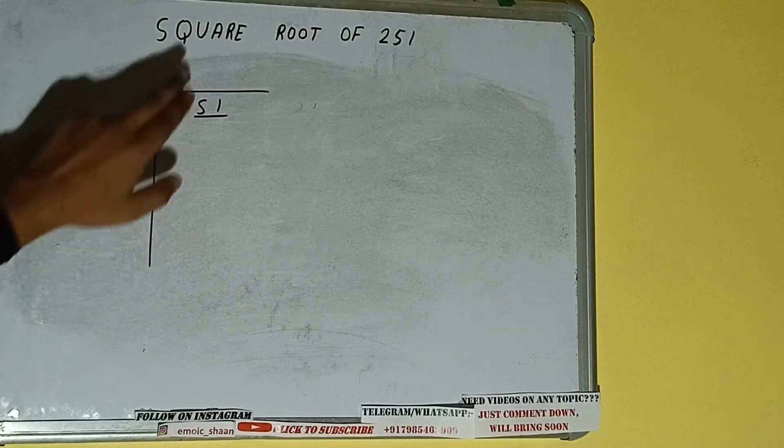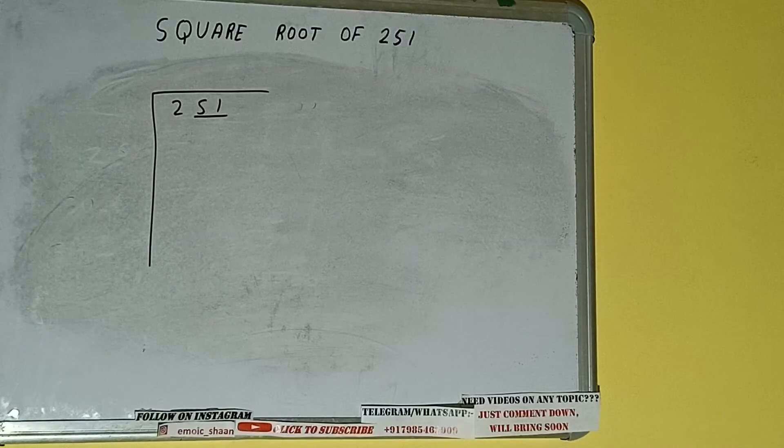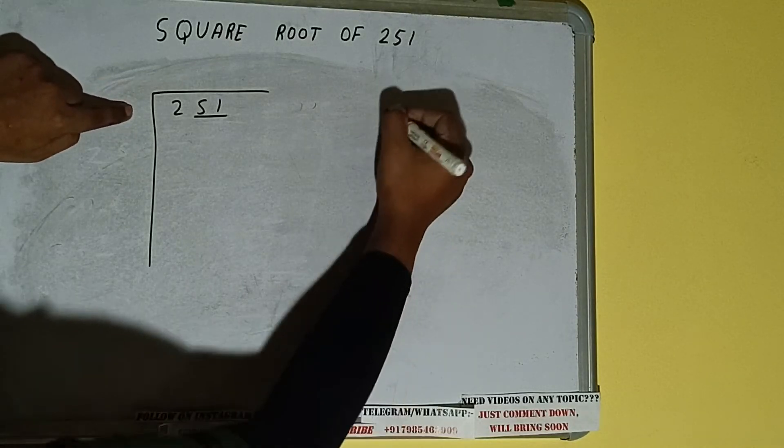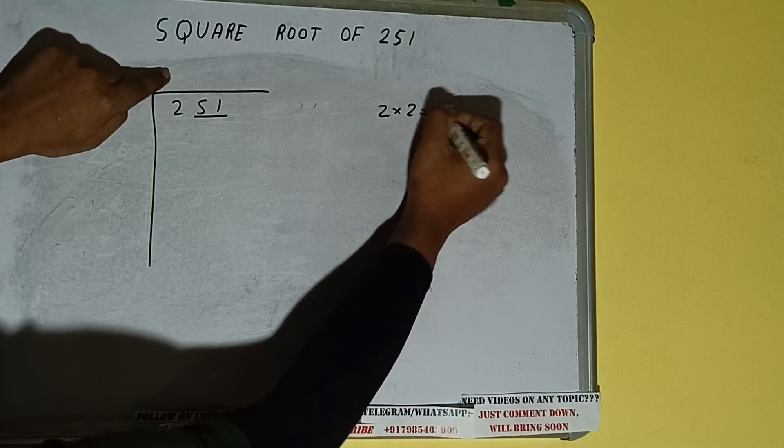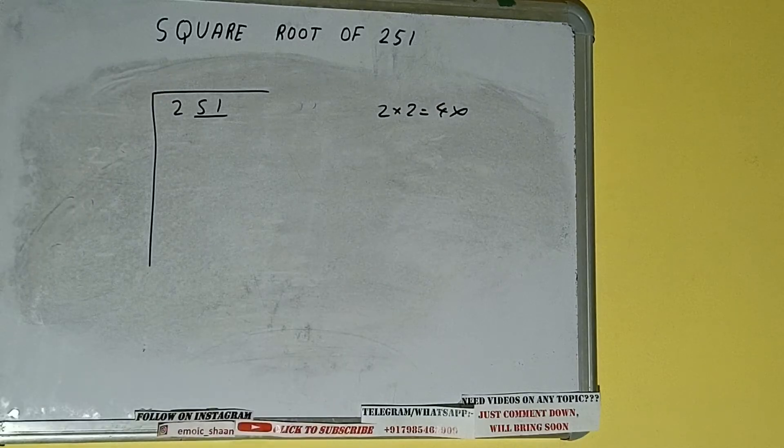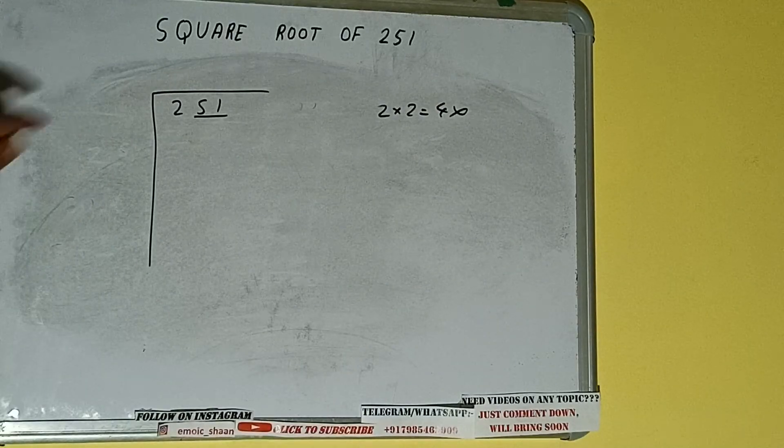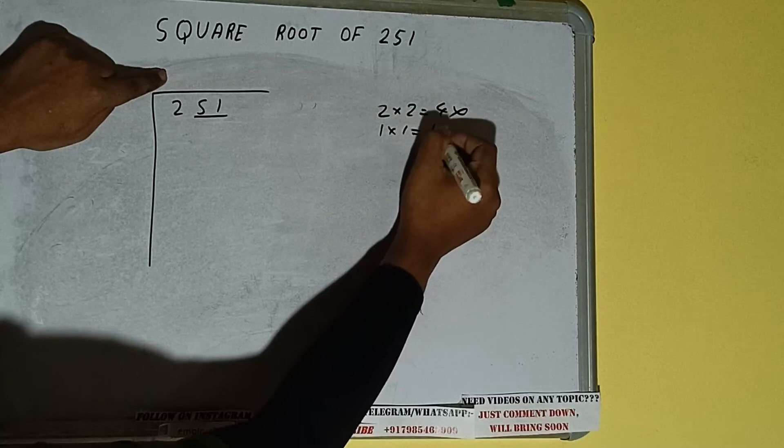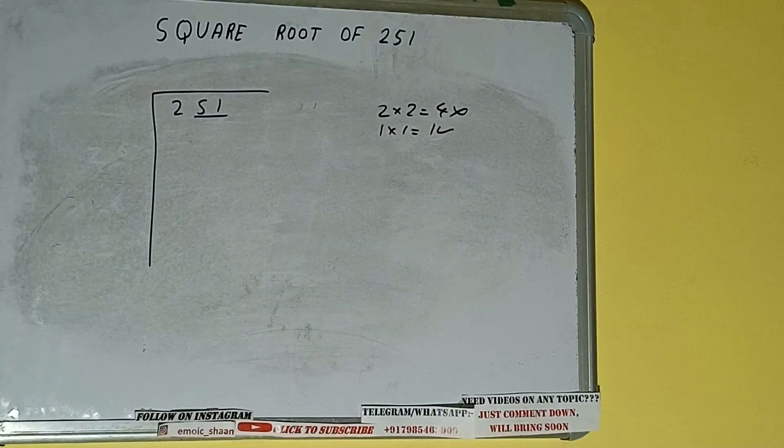The rule is whatever number we write here, we have to write here also. So if we write two here and two here, it will be four which is greater than two, so we cannot use it. If we write one here and one here, it will be one which is less than two.